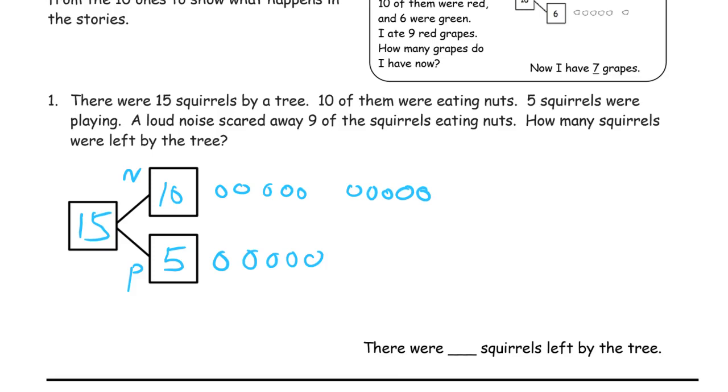So we can't take nine away from the five because there's not enough of them. So we take it all from the ten and we should know that there's going to be one left without even counting. And then we have five left here and one more. Six. Six squirrels left by the tree.